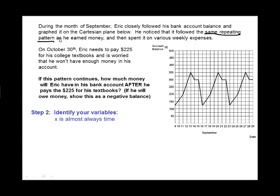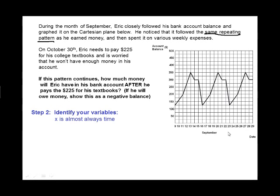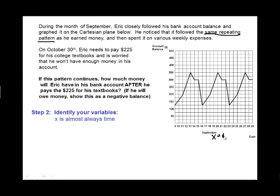Next, we're going to identify our variables, and the x is almost always time. Now, if we look at the x-axis here, it's actually showing the date. Well, the date is another way of showing time, so we'll actually say that x is our number of days.